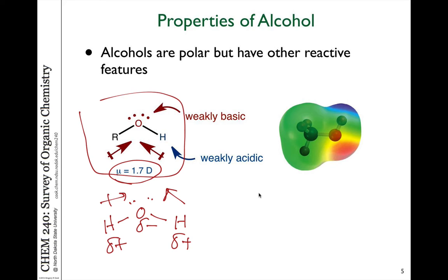And just like in water, the lone pairs on the oxygen, as you can see in the electrostatic map, do have a lot of negative charge characters. So they are weakly basic, either in the Bronsted-Lowry sense or in the Lewis basic sense. And the hydrogen, since it's partially positive, is weakly acidic. And it can participate in acid and base reactions, just like water can.